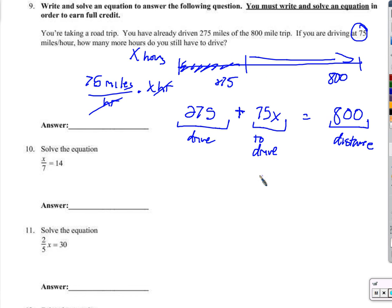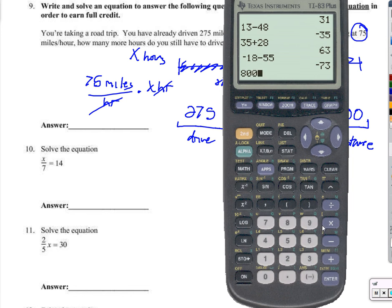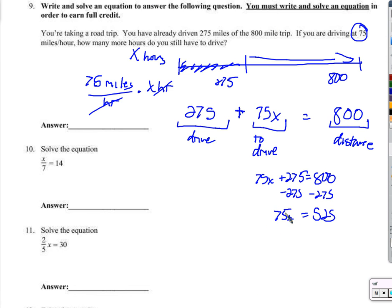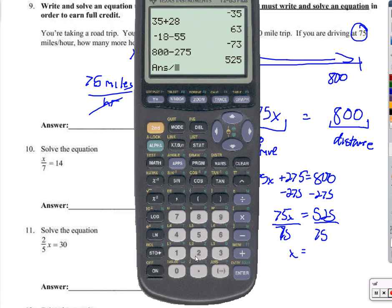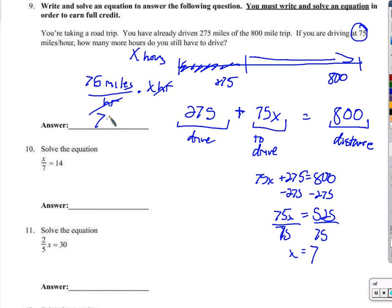So we solve this equation. We might want to write it a little bit more simply if we want to make it easier to look at. Very much like the equation we just did number eight. Subtract 275 from both sides to get 75X on this side. Let's go ahead and give my brain a little break here. 525. 75 times X is equal to 525. We'll divide by 75 on both sides. And X is 525 divided by 75. We still have 7 hours left to drive. 7 hours.